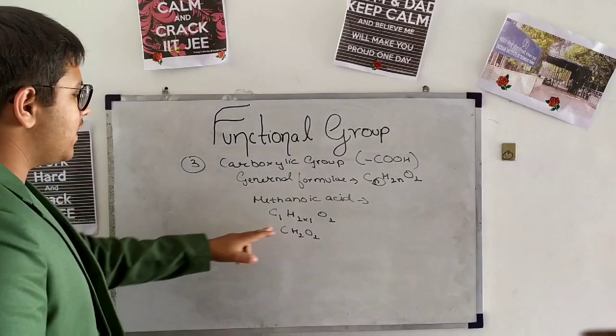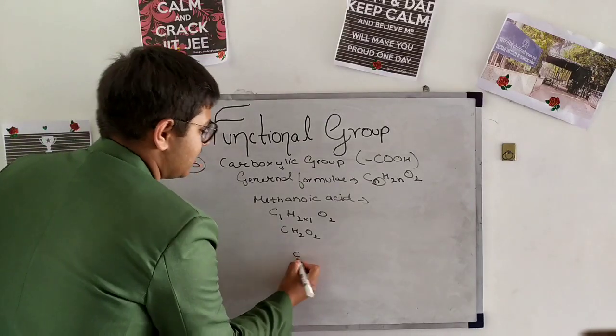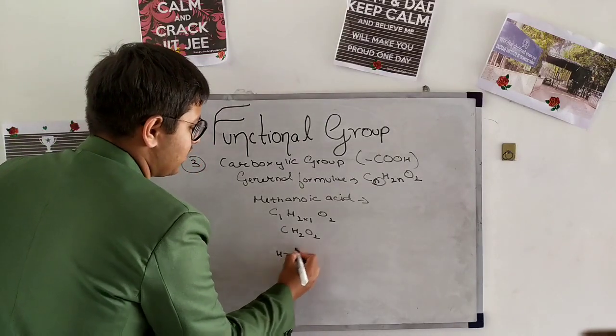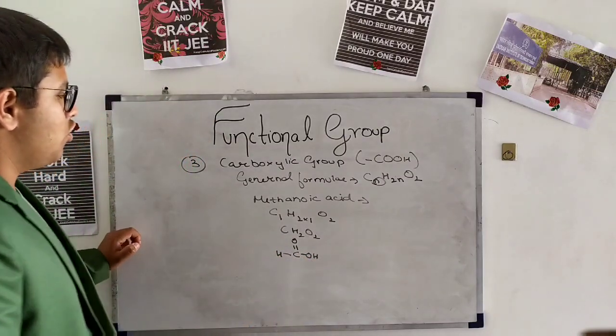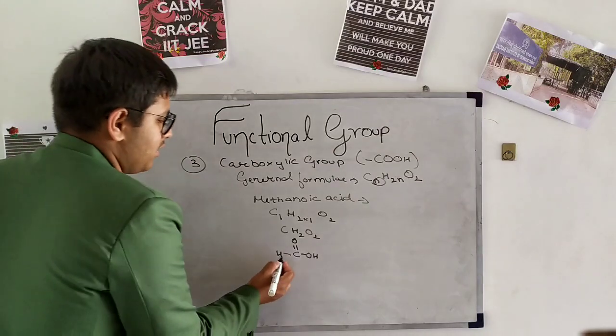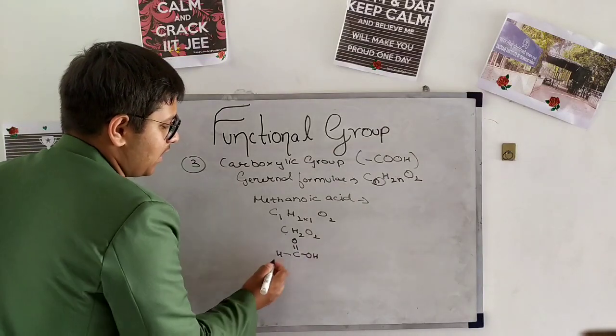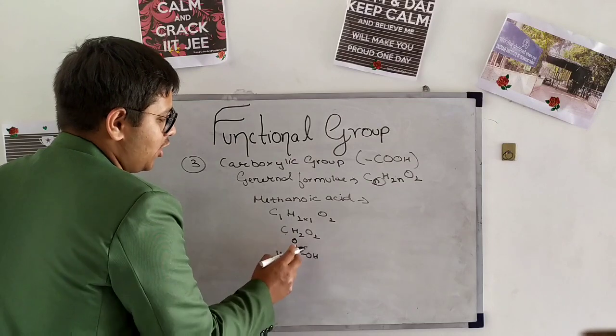Now there is one carbon, so here we place the structure formula will be like this: here H, double bond O, OH, and H. So you can see that there is one carbon here also one carbon, two hydrogen here also two hydrogen, two oxygen here also two oxygen.